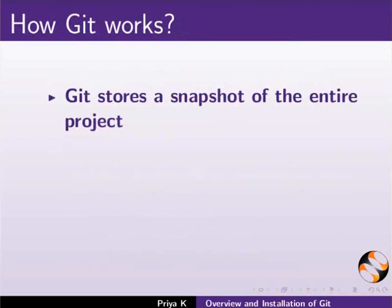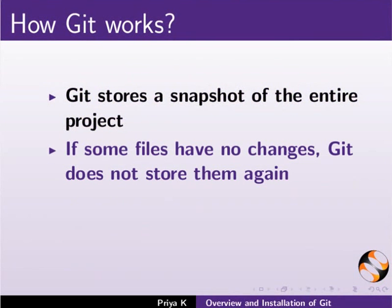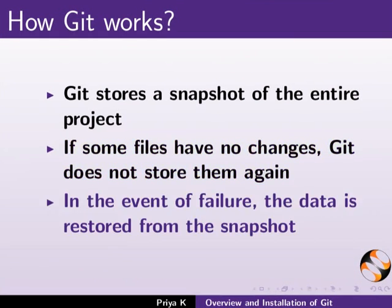Now let us see how Git works. Git actually stores a snapshot of the entire project. A snapshot is similar to taking a picture of all the files at that moment. If some files have no changes, Git doesn't store them again — it links them to the previous version. In the event of failure, the data is restored from the snapshot.